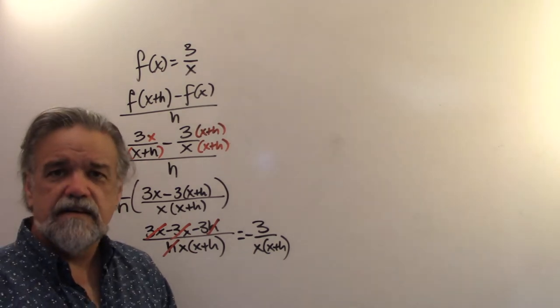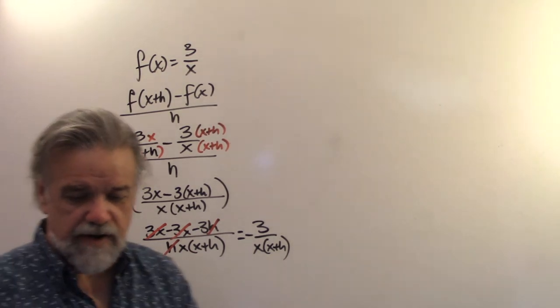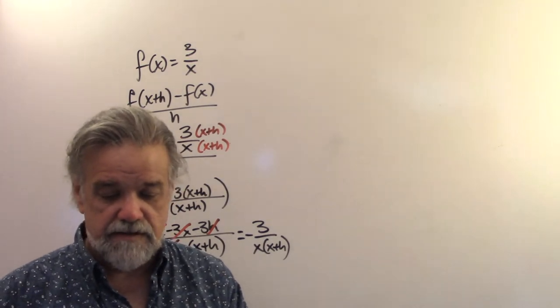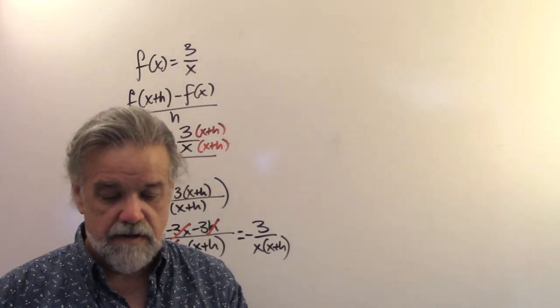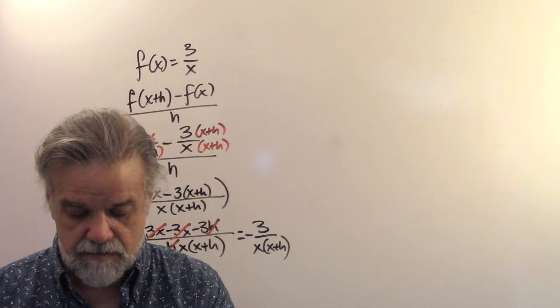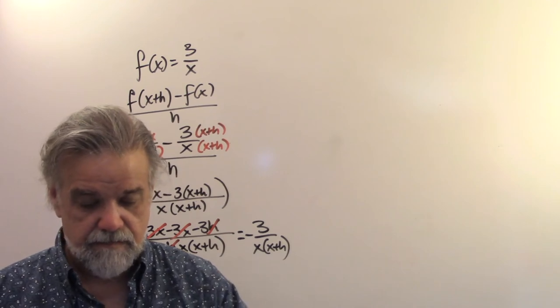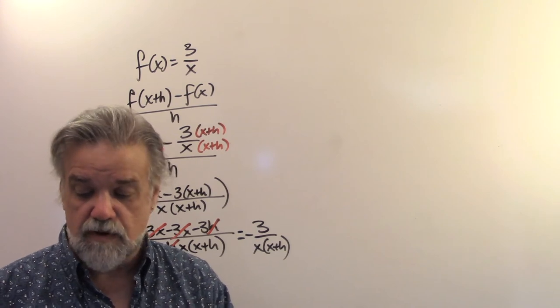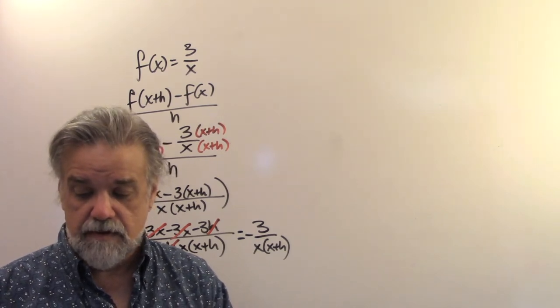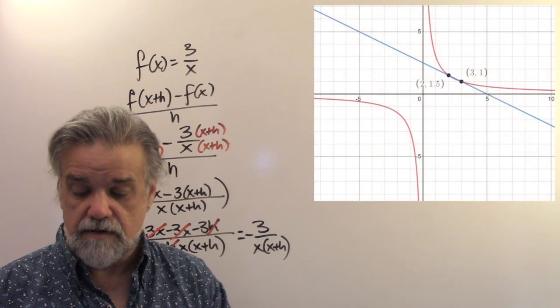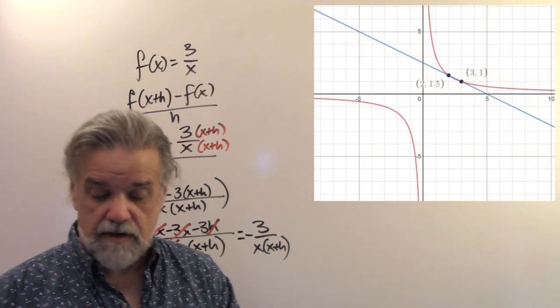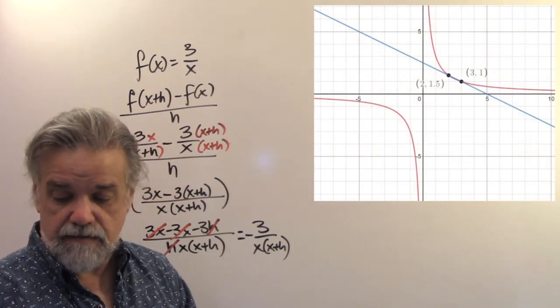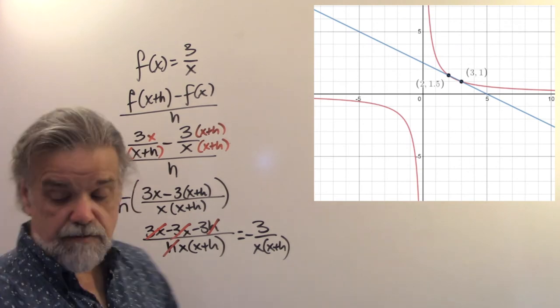So, again, let's take a look at a graph. And let's see if we can see what this is doing here. So it's going to be 3 over x, right? And I'm going to have h be 1 again. So here's our graph. That's the graph of y equals 3 over x.